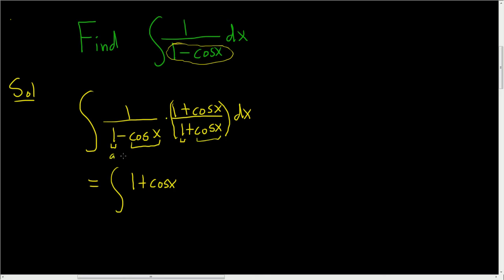So you want to think of this as a minus b, a plus b, and that gives you a squared minus b squared. So in this case, it'll be 1 squared, which is 1, minus cosine squared x dx.